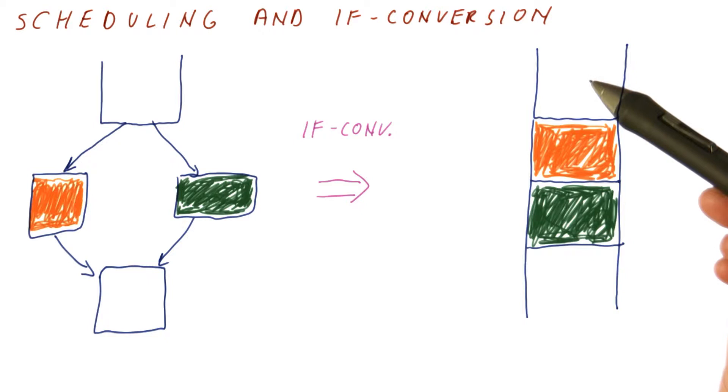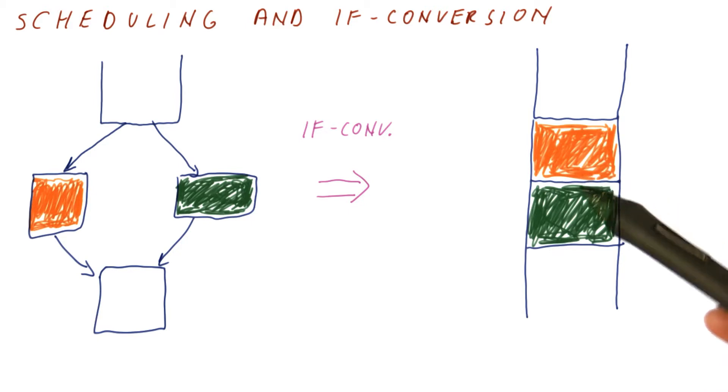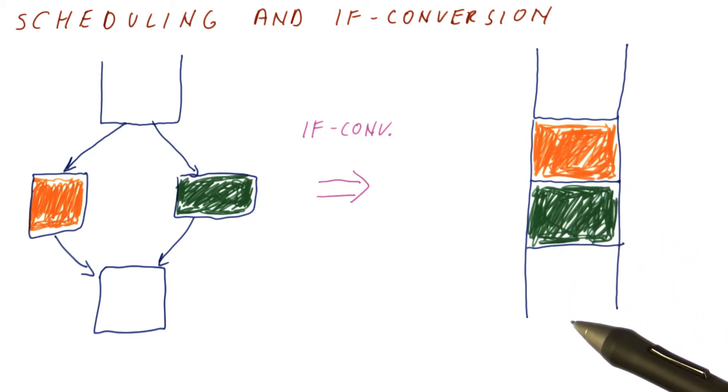However, after if-conversion, we do the stuff that was before the if-then-else. We then have the orange code predicated so that it only results in execution. And then we have the orange code predicated one way, green code predicated the other way, and then the stuff after the loop.